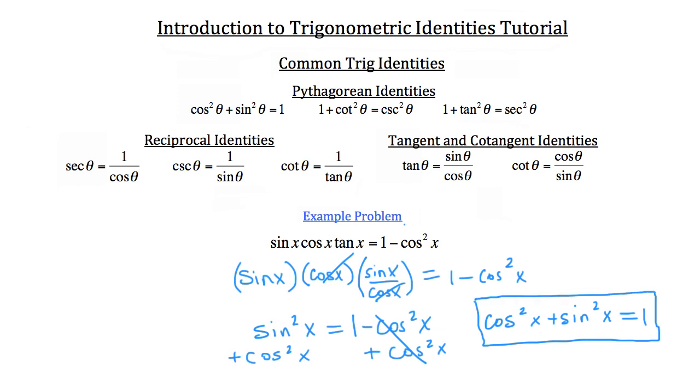That was this Pythagorean identity right here. So now that we've verified that, the problem's done, because that's the intention of this problem — to verify that identity.